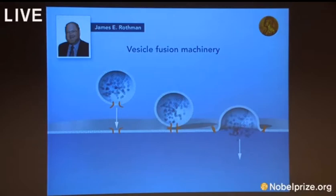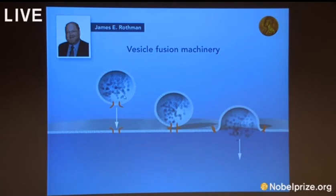James Rothman also studied the nature of the cell's transport system. This slide shows a vesicle at three different stages in the transport process, as well as the membrane of the cell. In the 1980s and 1990s, Rothman discovered specific proteins — pictured here on the vesicle in orange and the membrane in orange as well — that form a complex enabling vesicles to fuse with their target membranes.